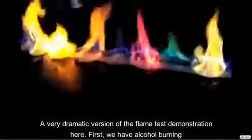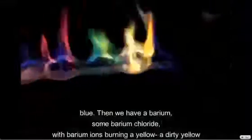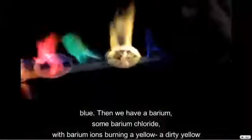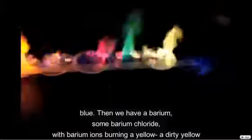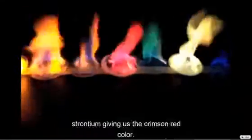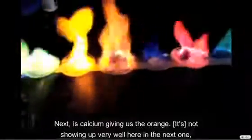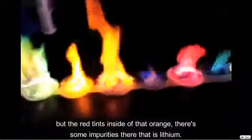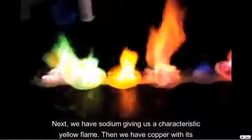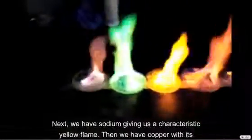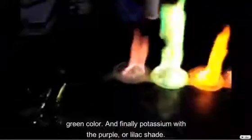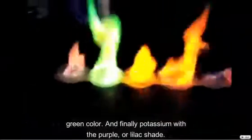Very dramatic version of the flame test demonstration here. First we have alcohol burning blue. Then we have some barium chloride with barium ions burning a yellow, a dirty yellow color. Then we have boron being green. Strontium giving us the crimson red color. Next is calcium giving us the orange. Not showing up very well here in the next one, but the red tints inside of that orange there, there's some impurities there. That is lithium. Next we have sodium giving us the characteristic yellow flame. Then we have copper with its green color. And finally, potassium with the purple or lilac shade.